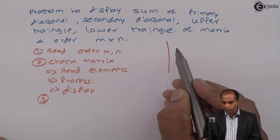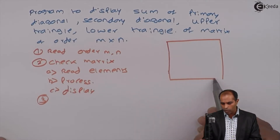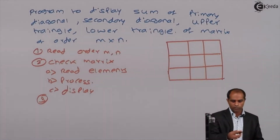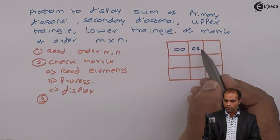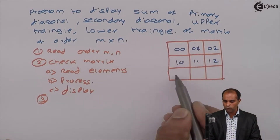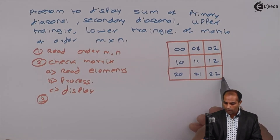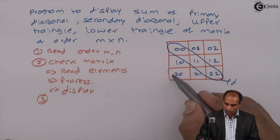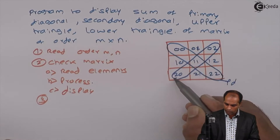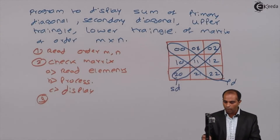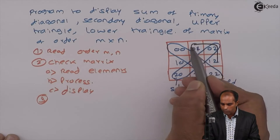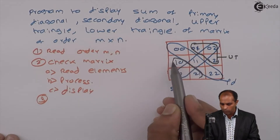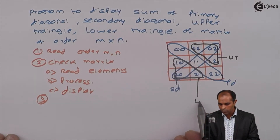Now the question comes: how to identify whether elements lie on the primary diagonal, secondary diagonal, upper triangle, or lower triangle. Let's mark these for a 3x3 matrix with indices 00, 01, 02, 10, 11, 12, 20, 21, 22. The elements on the main section are the primary diagonal; the elements on the opposite side are the secondary diagonal. Elements above the primary diagonal are the upper triangle, and elements below the primary diagonal are the lower triangle.